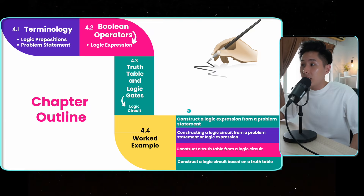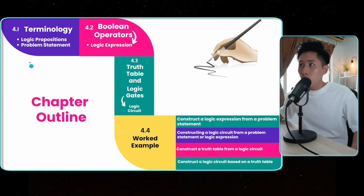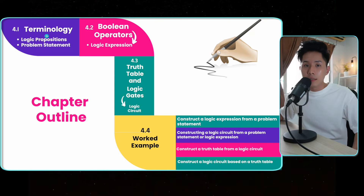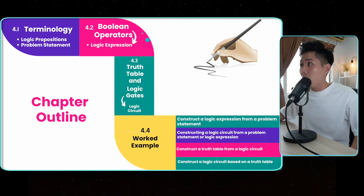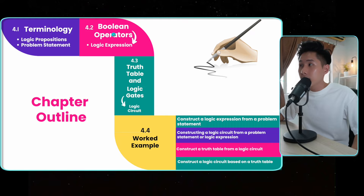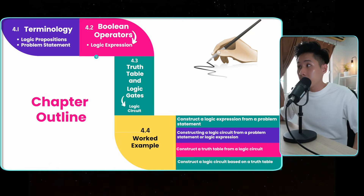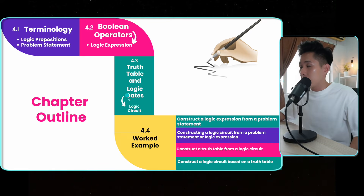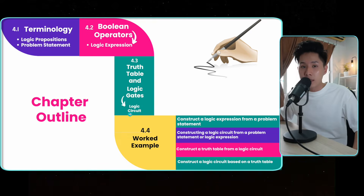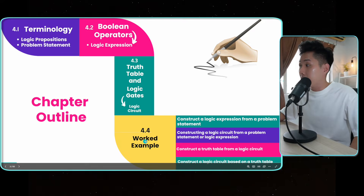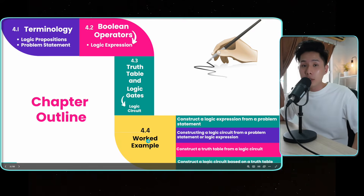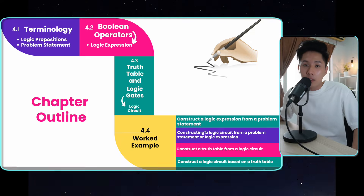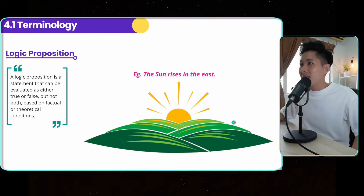This is the chapter outline. First, we'll dive into the terminology involved in this chapter, followed by how we can use Boolean operators to make a logic expression, truth tables, logic gates, and eventually logic circuits. We'll end the videos with a few worked examples to help you understand how to solve frequently asked exam questions about logic gates. So let's move on to understand the first term: logic proposition.